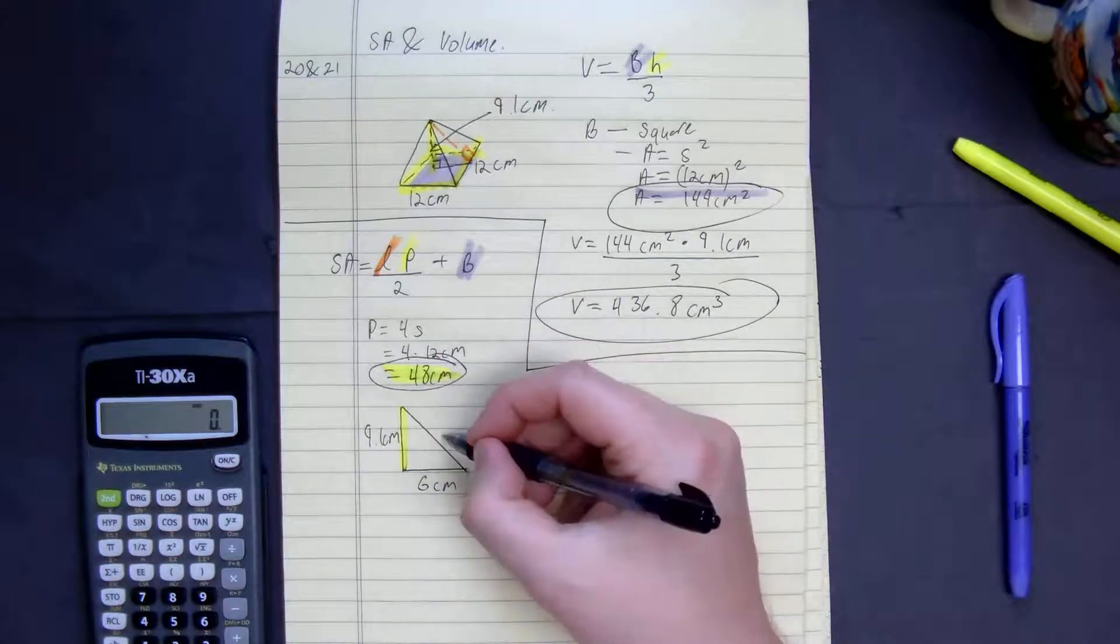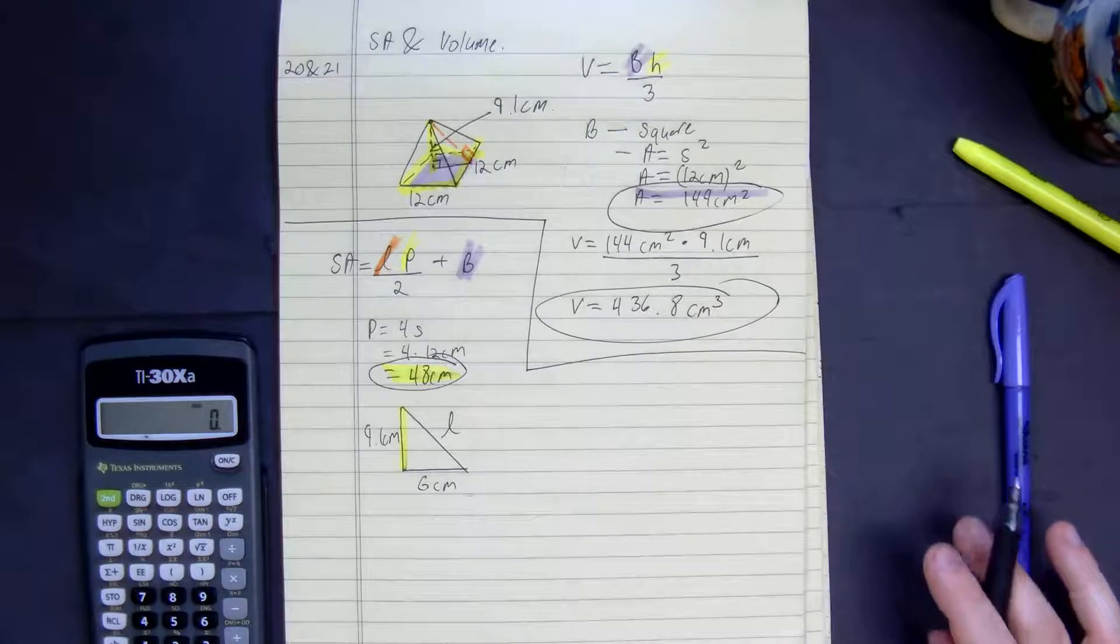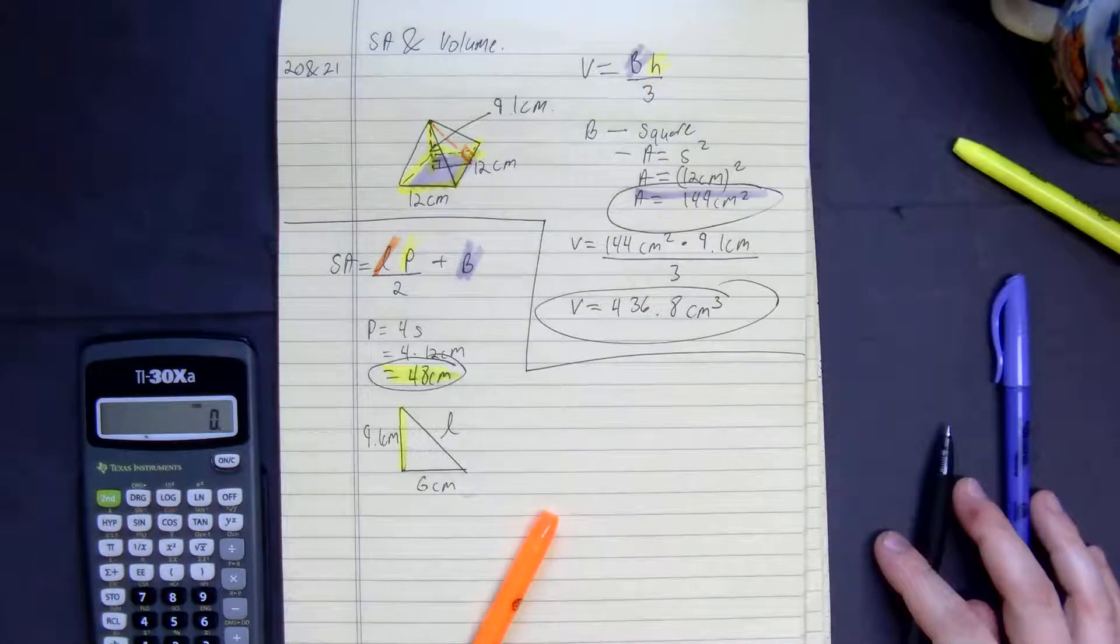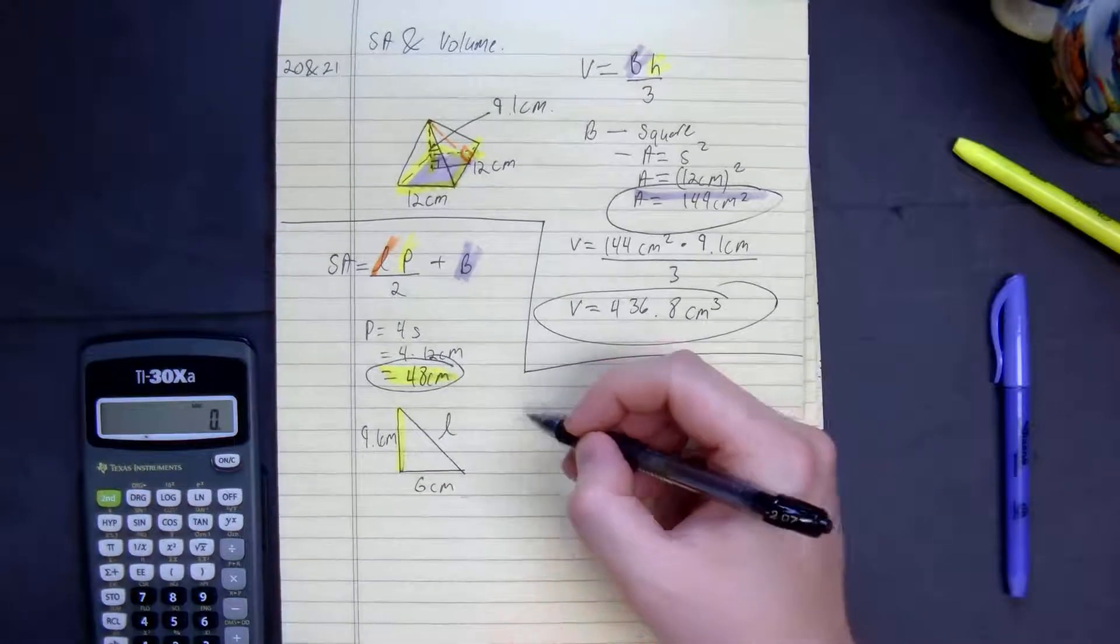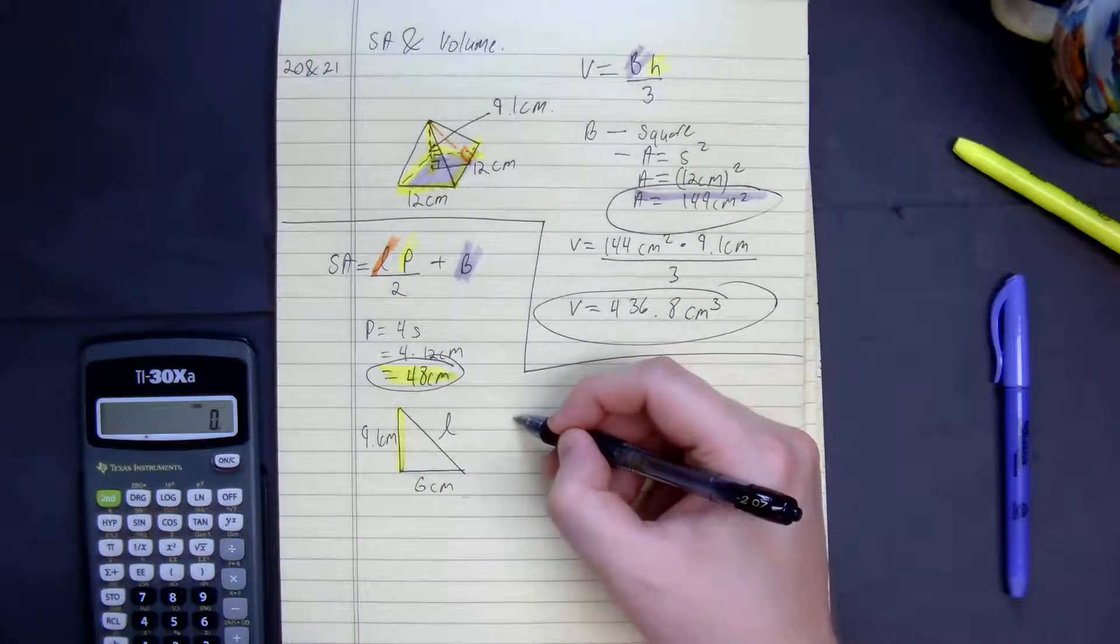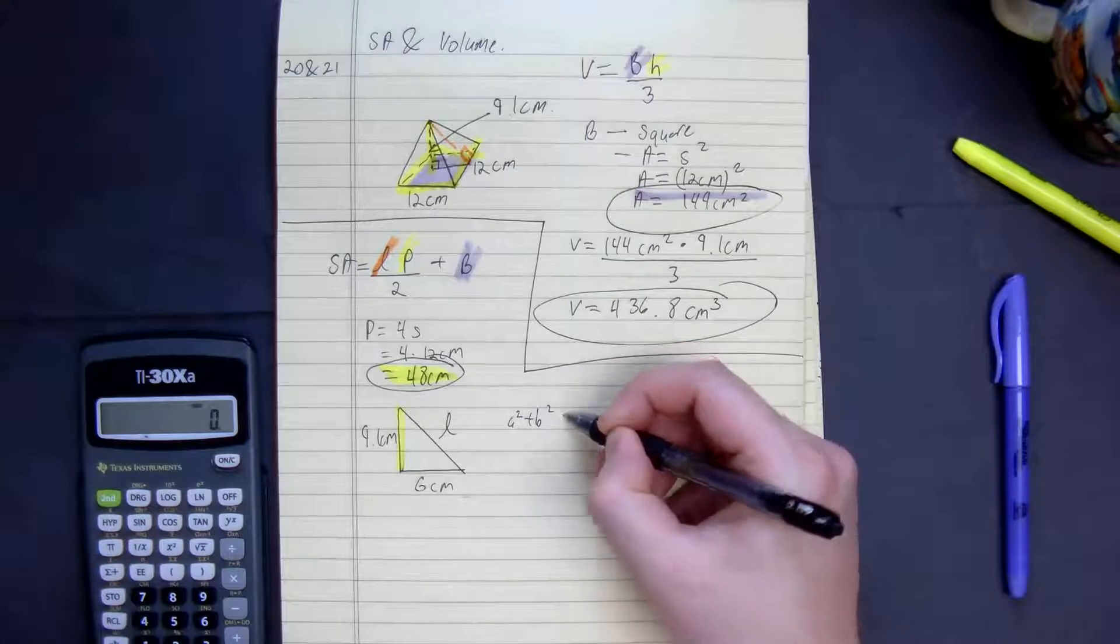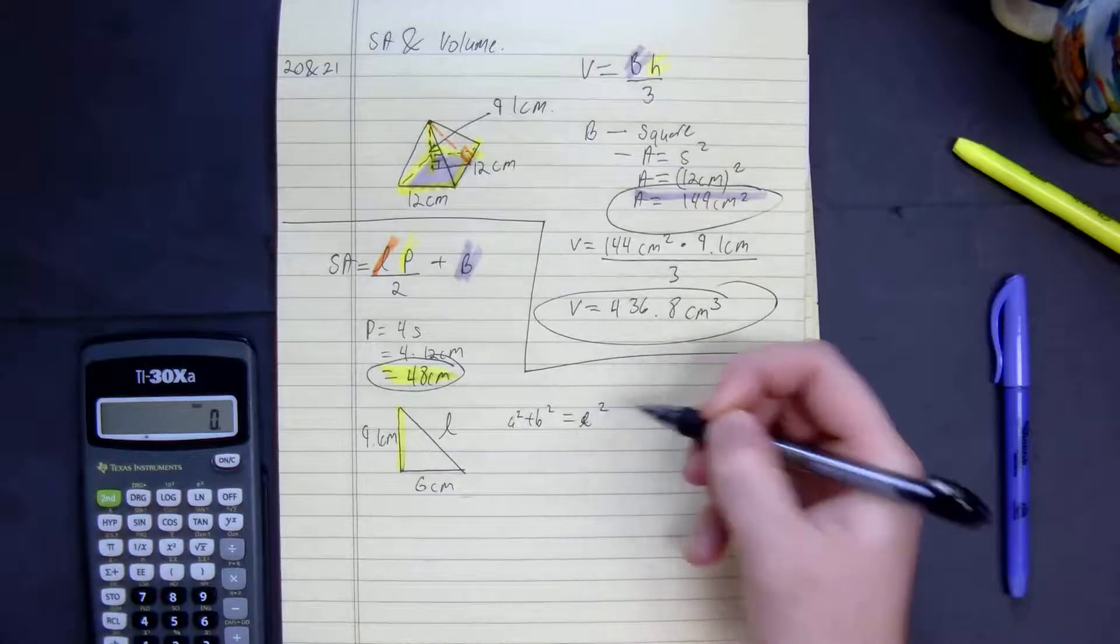And we don't know what the lateral height is. This thing, right? All right, so right here, we do the Pythagorean theorem. A squared plus B squared equals C squared.